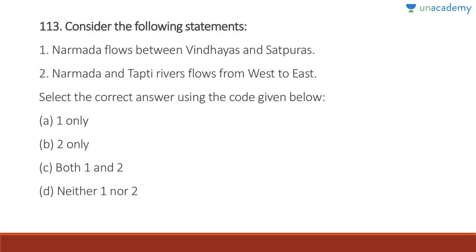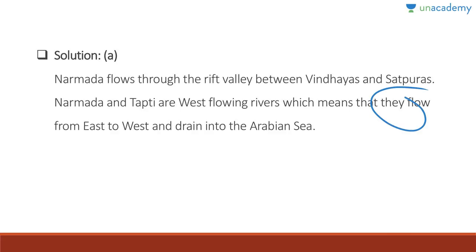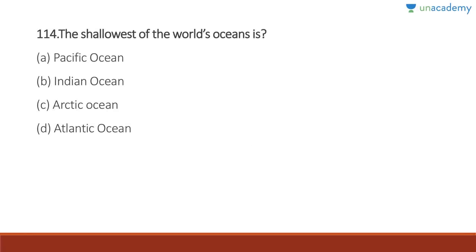Question 113: Narmada flows between the Vindhya and Satpura ranges — correct. Narmada and Tapti rivers flow from west to east — wrong; Narmada and Tapti are west-flowing rivers, flowing from east to west and draining into the Arabian Sea. Most peninsular rivers flow from west to east and drain into the Bay of Bengal. Answer is A, one only. Narmada flows through the rift valley between Vindhya and Satpura.